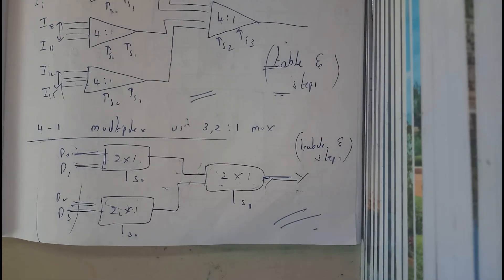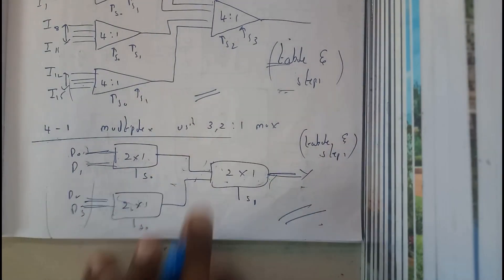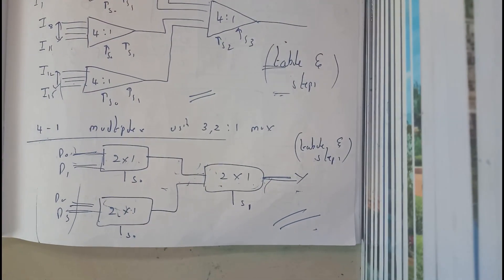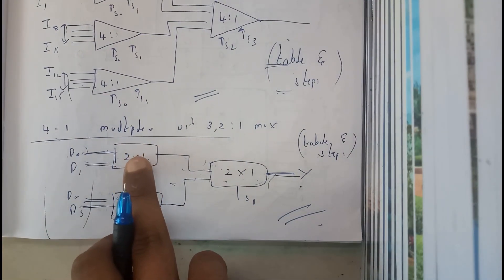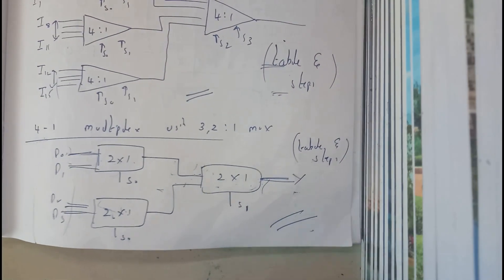We will be using three 2-to-1 multiplexers: two in the initial level one, and the third one in level two. At the end, we need to get only a single output.